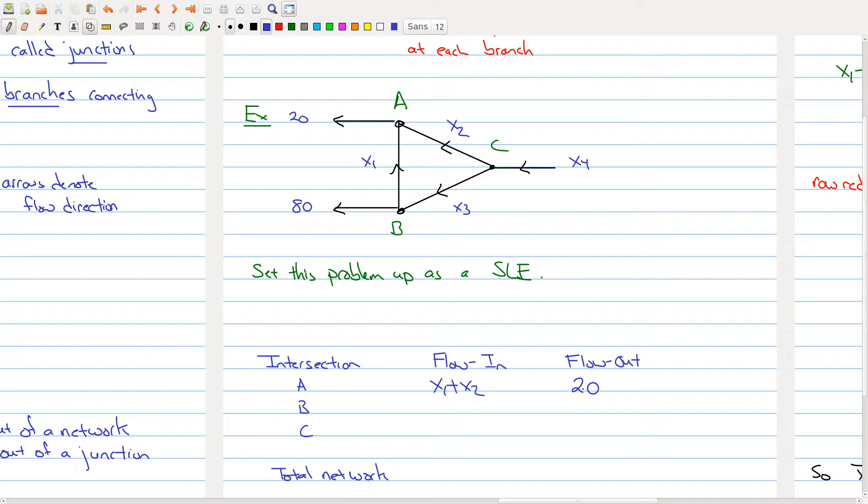Let's repeat our analysis for B. The flow in, well there's only one thing coming in, x3, and the flow out is 80 plus x1.